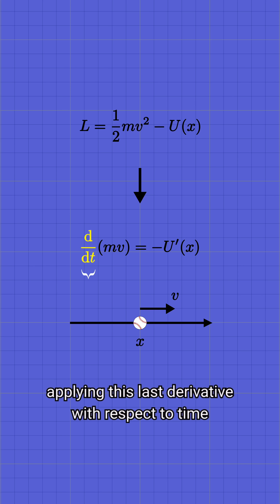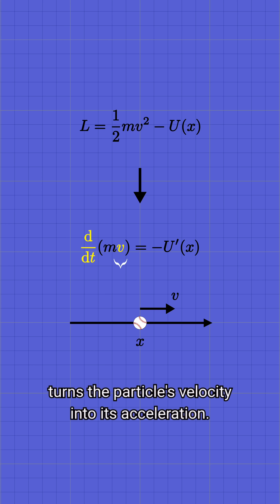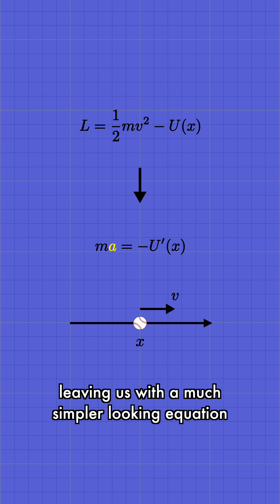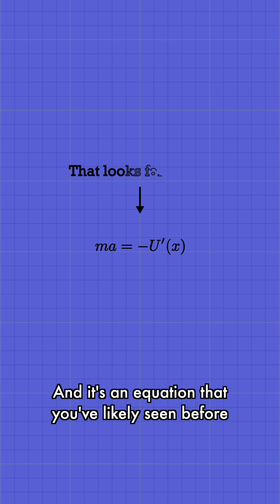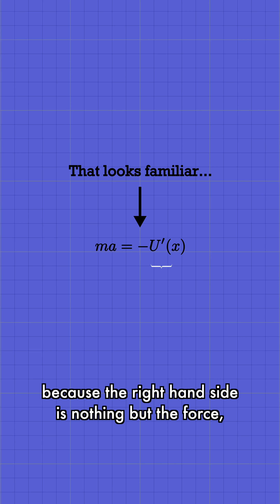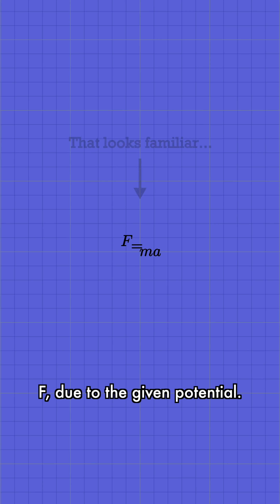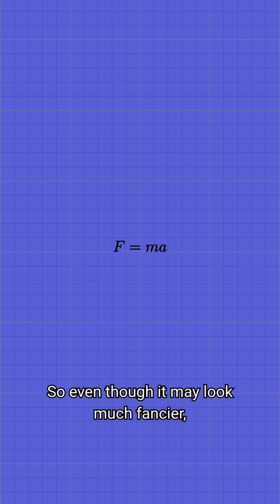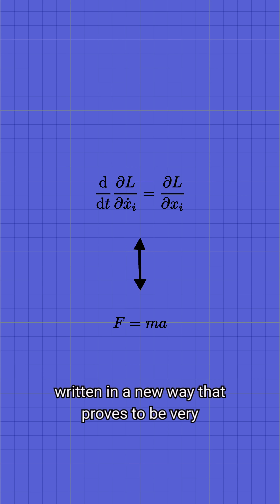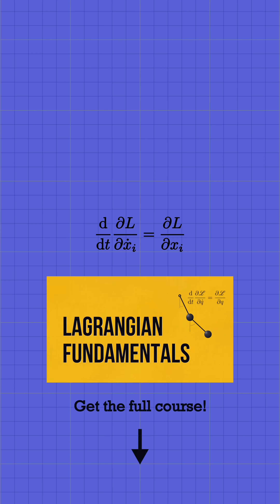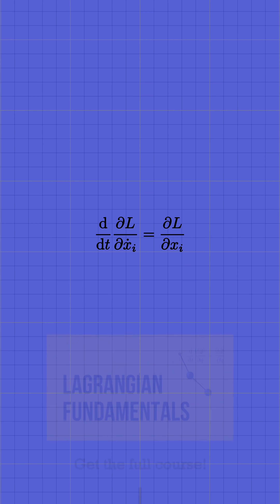Finally, applying this last derivative with respect to time turns the particle's velocity into its acceleration, leaving us with a much simpler looking equation than the one that we started with. And it's an equation that you've likely seen before, because the right hand side is nothing but the force f due to the given potential. So even though it may look much fancier, the Euler-Lagrange equation is nothing but your old friend f equals ma, written in a new way that proves to be very powerful in more complicated problems.